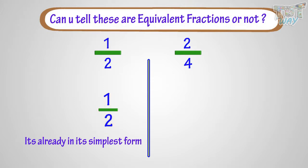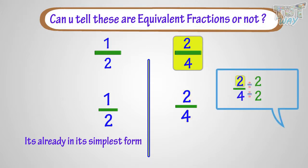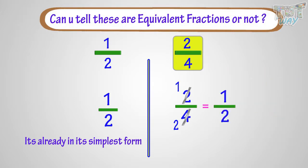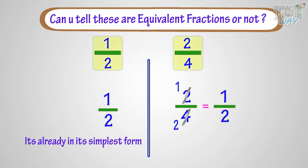Now let's take the other fraction. It is 2 by 4. Here we can divide both the numerator and denominator by 2. 2 divided by 2 equals 1, so cut 2 and make it 1. 4 divided by 2 equals 2, so cut 4 and make it 2. So the fraction left is 1 by 2, which is equal to the other fraction, which is also 1 by 2. So this proves that both the fractions are equivalent fractions.